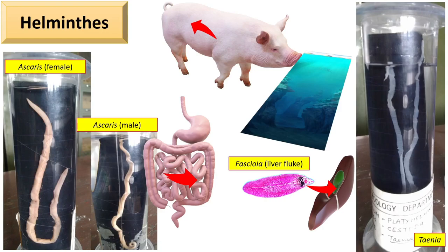Advancements seen in these organisms include three layers — ectoderm, mesoderm, and endoderm — at the organ system level. Excretory organs and gonads are present.